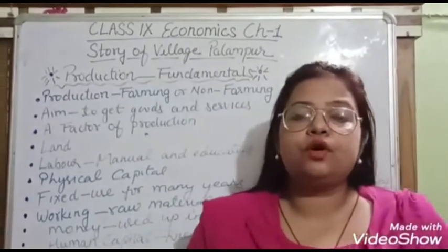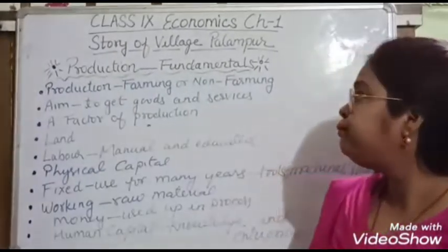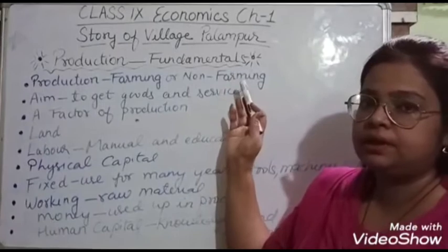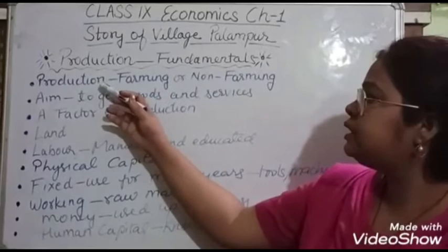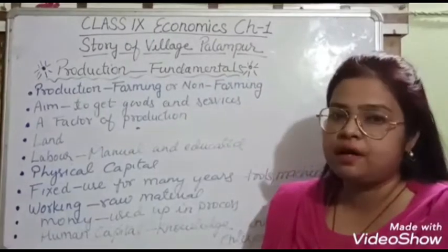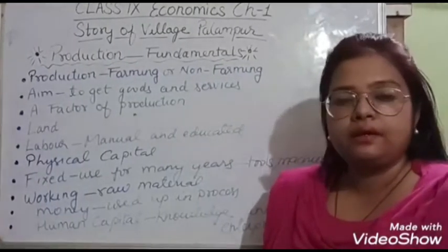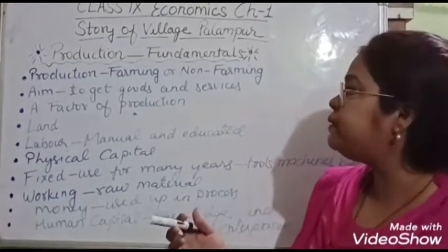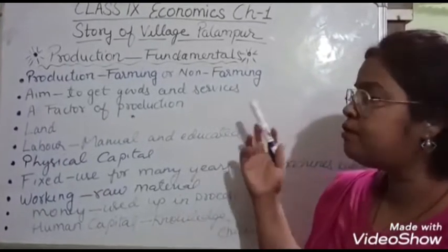What are the factors of production that the village has? Production is the fundamental key to success for any city, state, or country — it is very necessary. Production can be farming or non-farming: a village can be engaged in farming activity or non-farming activity. The primary activity includes farming, agriculture, or agro-based industry. People can be engaged in both types of activities, and the aim is to get goods and services.